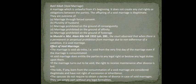The second kind is void marriage, known as Batil, which is unlawful from its very beginning. It does not create any civil rights or obligations between the parties. The offspring of a void marriage is illegitimate. A void marriage arises in circumstances such as: marriage through forced consent — if consent is obtained by force, fraud, coercion, or undue influence, the marriage is void.